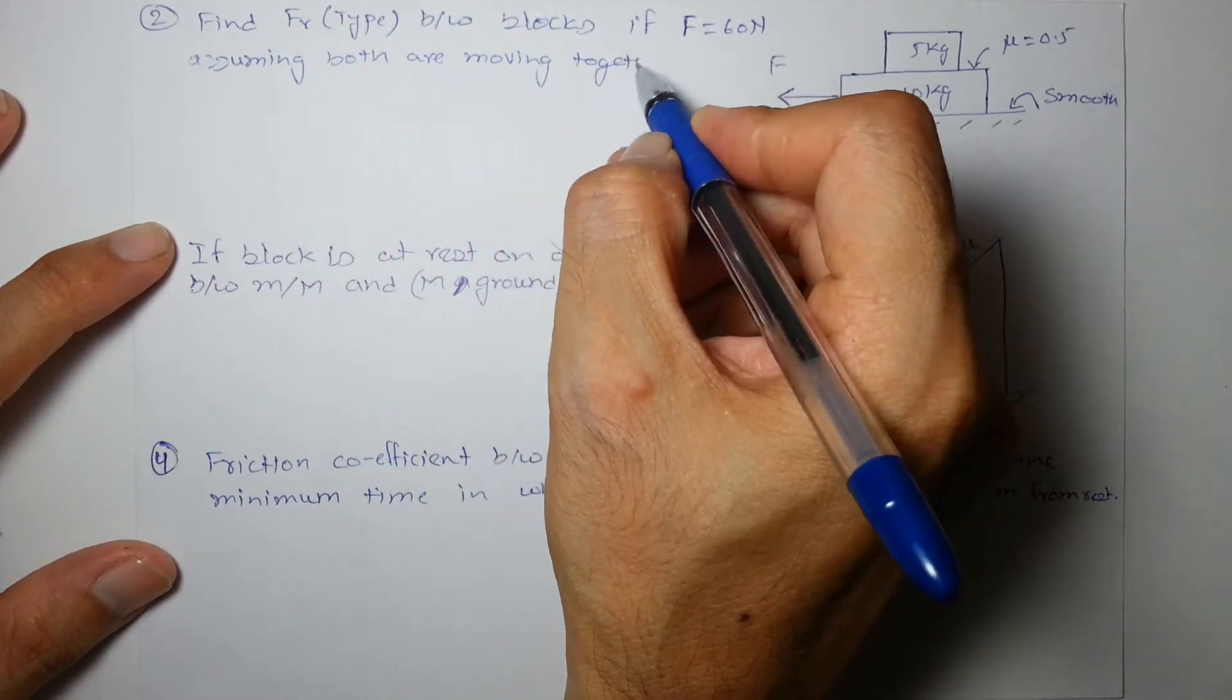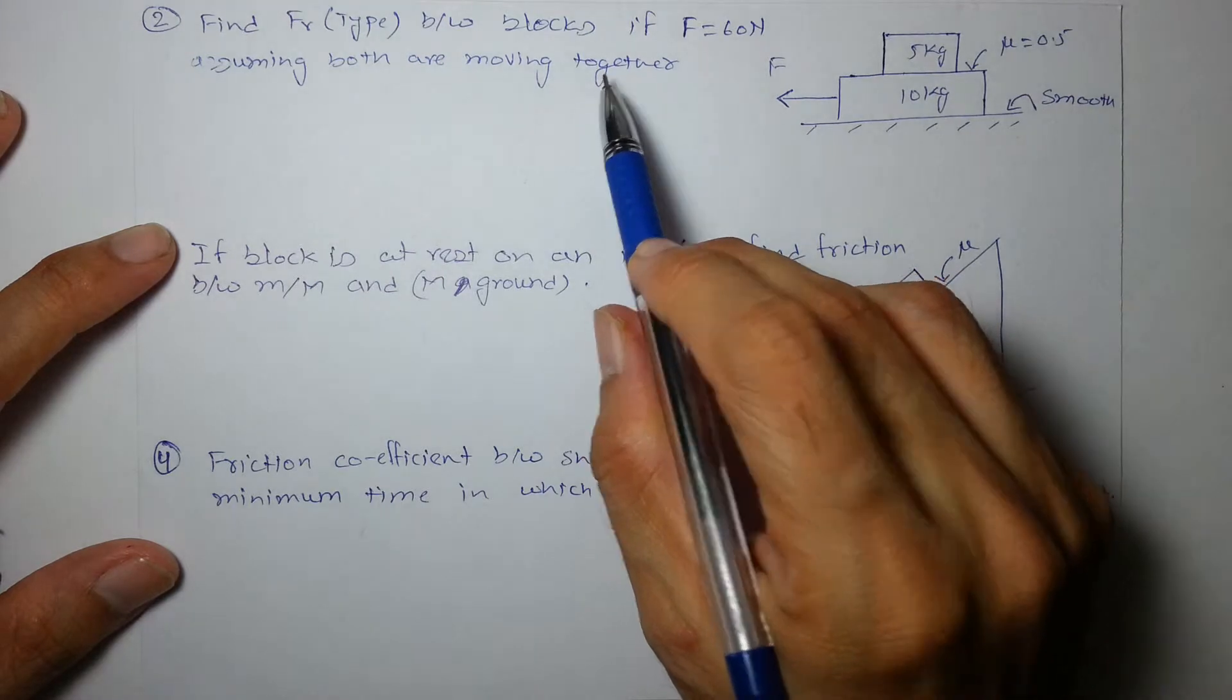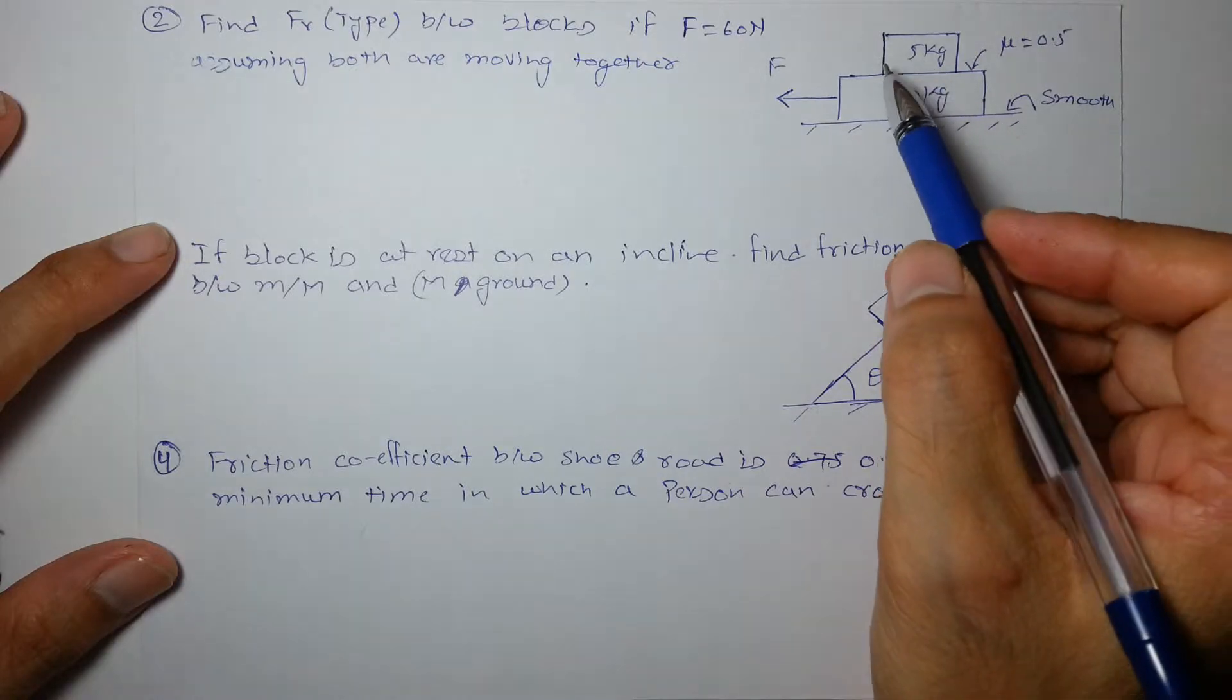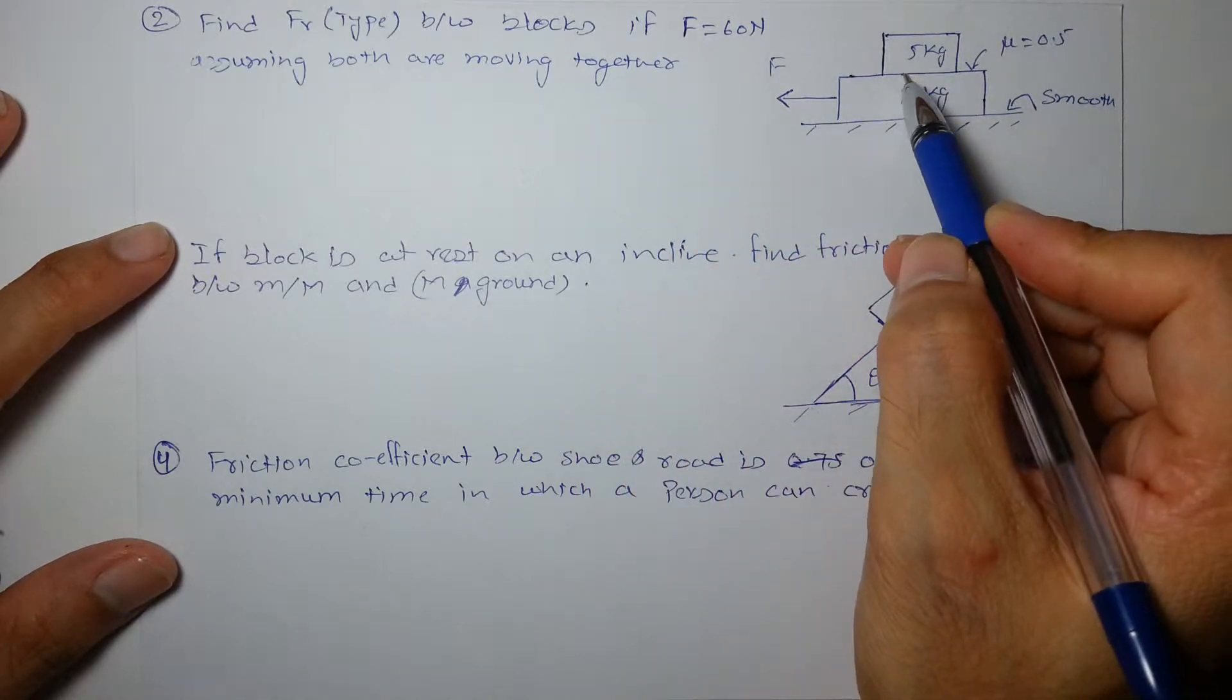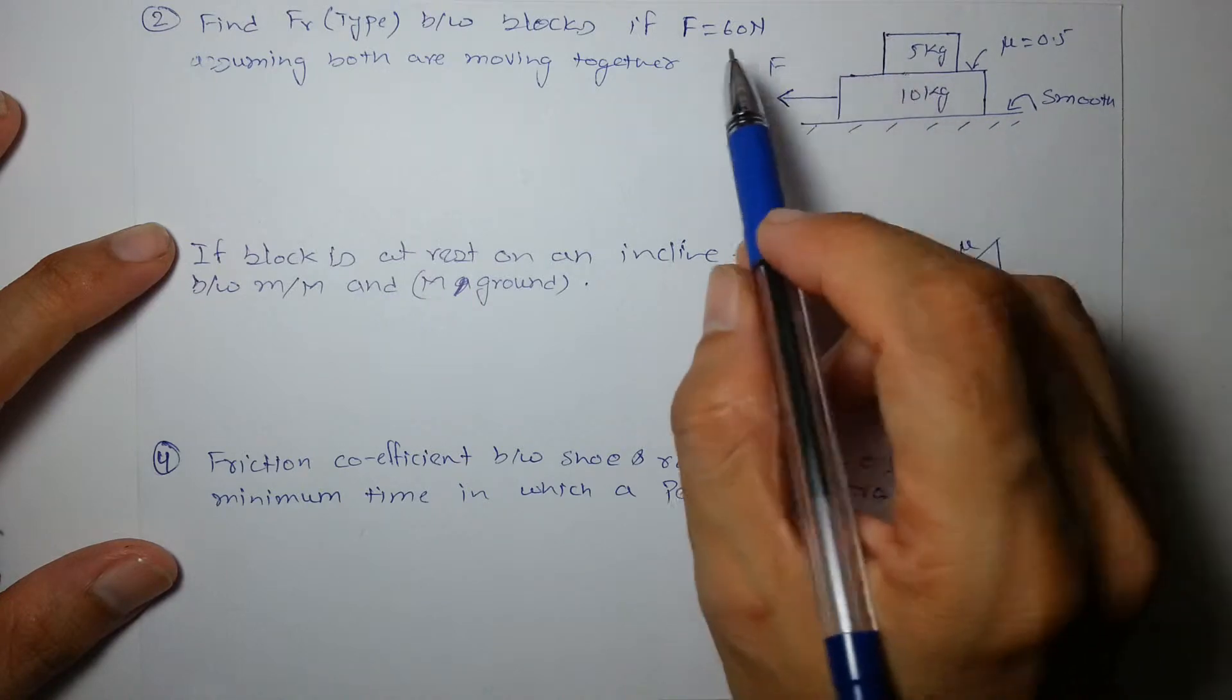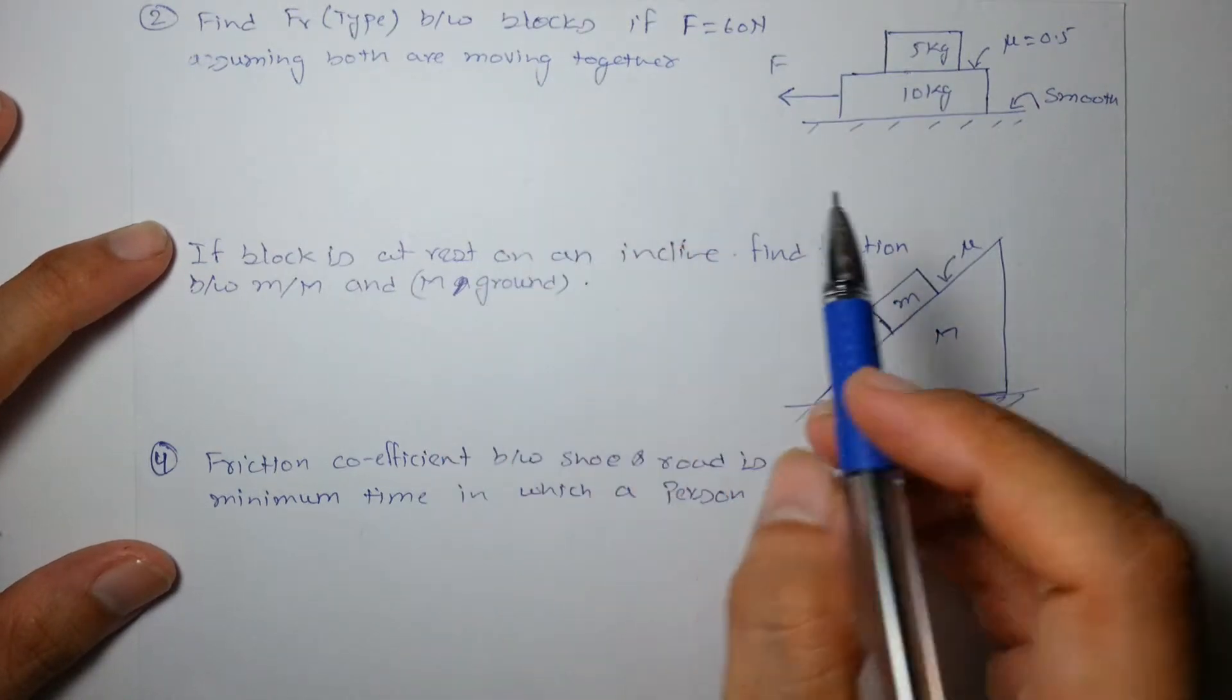This is an assumption, but if the friction between them by assuming this comes out to be smaller than the static friction maximum value which is limiting friction, we can say our assumption is right. And if friction comes out to be more than the maximum possible friction, then obviously this assumption will be wrong.